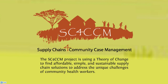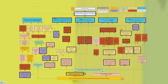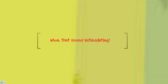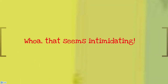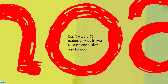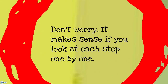The SC4CCM project is using a theory of change to find affordable, simple, and sustainable supply chain solutions to address the unique challenges of community health workers. SC4CCM developed a project theory of change to characterize factors that influence the availability of medicines for CHWs. That may seem intimidating, but it makes sense if you look at each step one by one.